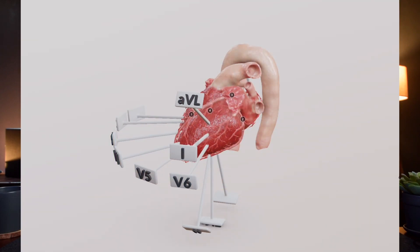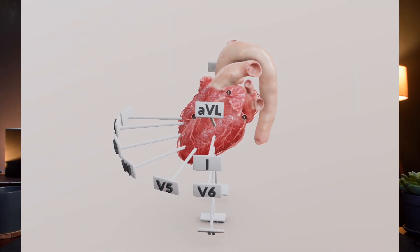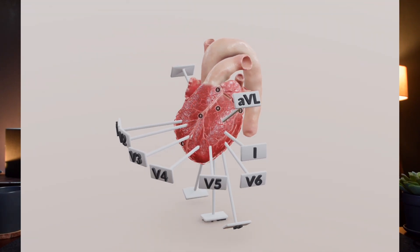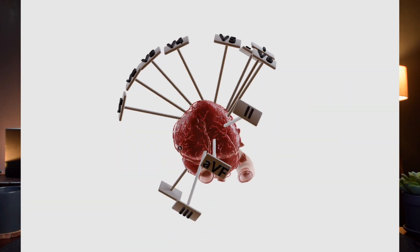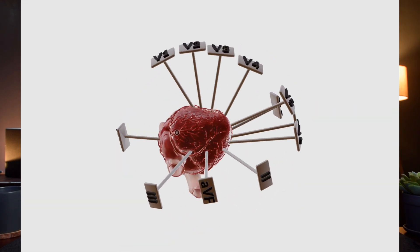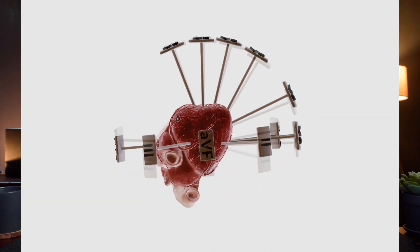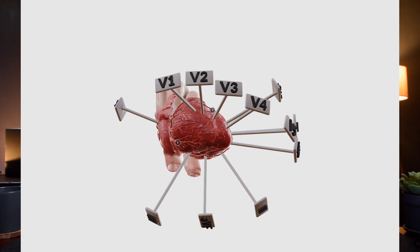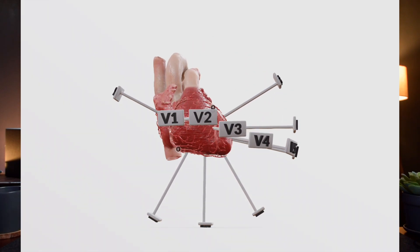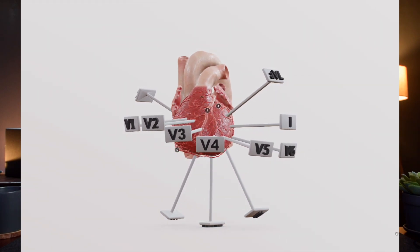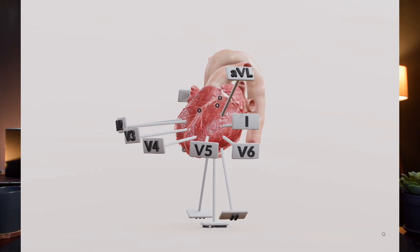The take-home messages: lead one, AVL, V5, and V6 represent the lateral wall of the heart. Lead two, AVF, and lead three represent the inferior wall of the heart. V1 and V2 represent the interventricular septum. And V3 and V4 represent the anterior wall of the heart.